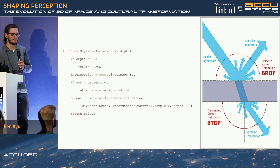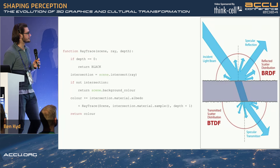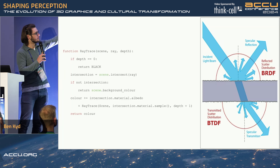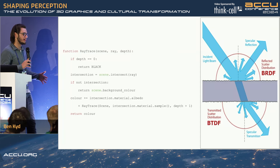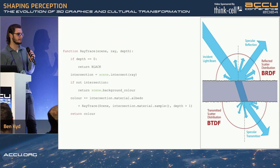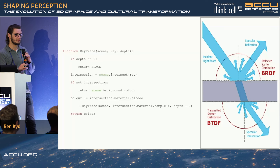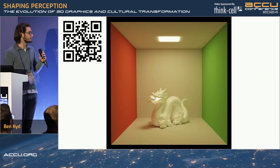A lot of you will be more familiar with code than a diagram. So very simply, it is just a recursive function that goes through every object in a scene. If it hits an object, it picks up that colour, bounces, and goes again until it hits the light source or hits nothing and is black. This very simple function, just in pseudocode here, is the foundation for all modern photorealistic graphics. Here is my renderer — it looks pretty good.